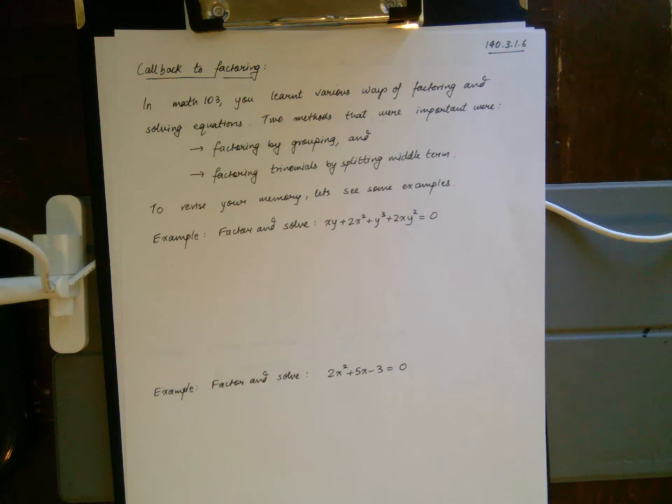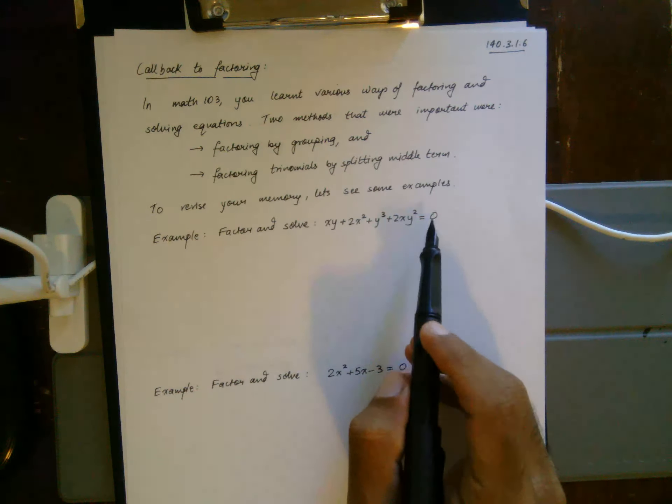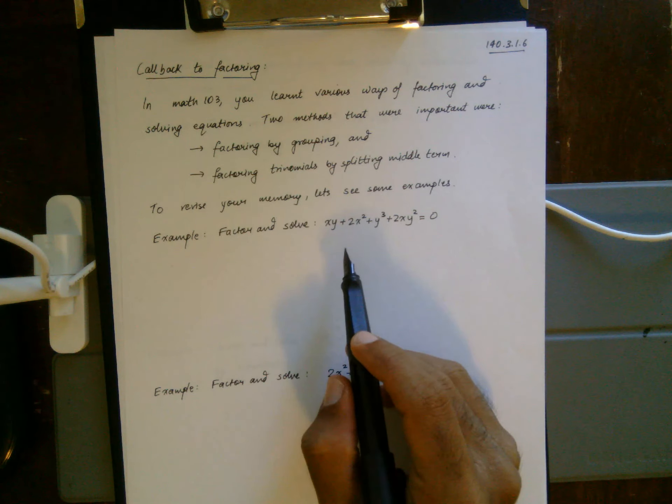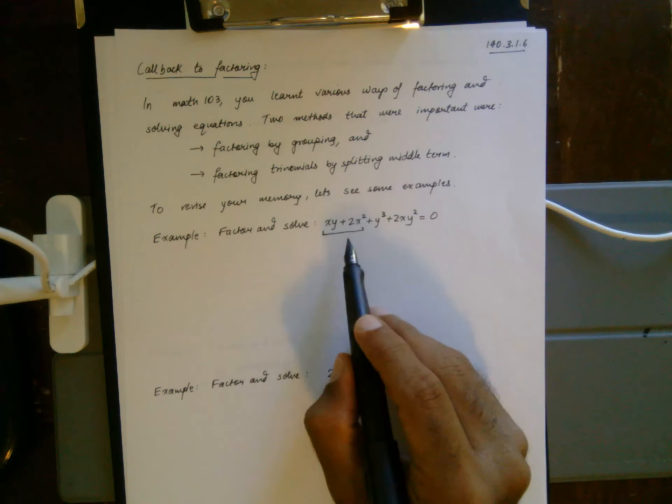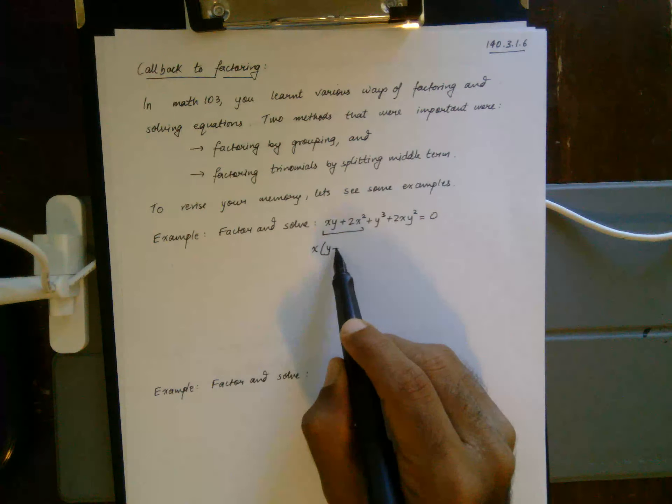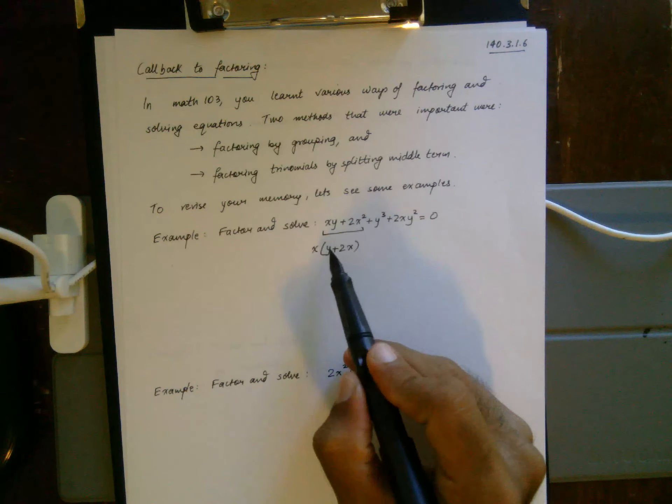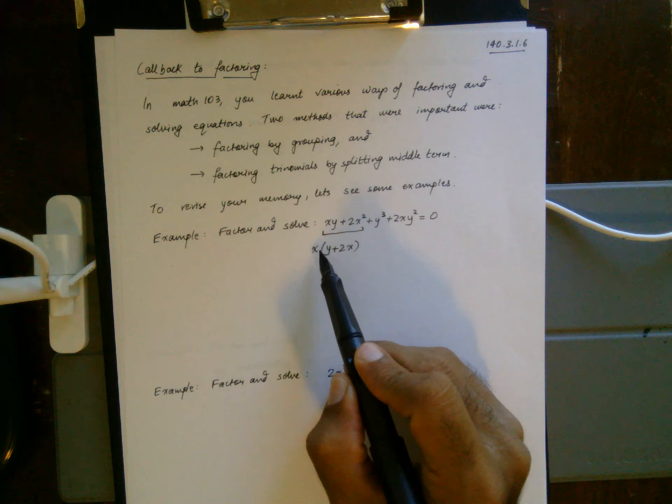The first one has four terms, so I'm going to try to factor by groups. Between xy and 2x², I can factor out x and I'm left with y plus 2x. You can verify: if you FOIL, x times y gives you xy and x times 2x gives you 2x².